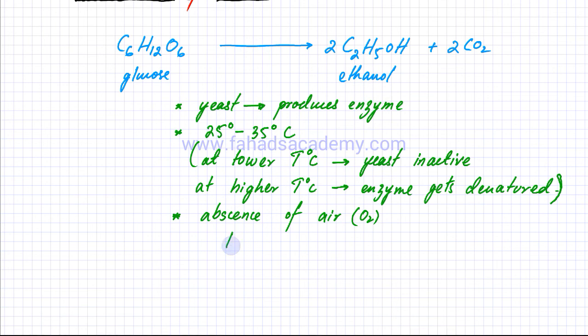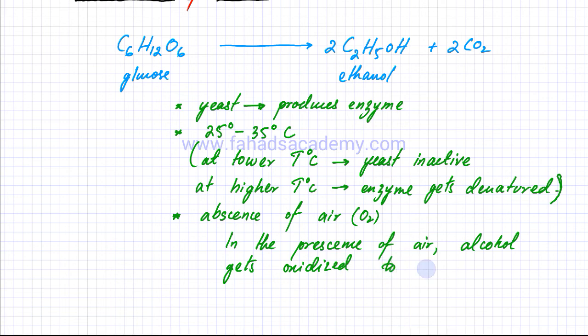So in the presence of air, the alcohol might get oxidized. As in the presence of air, the alcohol produced gets oxidized to a carboxylic acid. So we must avoid air as well. So whenever alcohol is produced, there shouldn't be any absence of air. The temperature used is around 25 to 35 degrees centigrade. And yeast is required, which produces an enzyme which facilitates the breakdown of glucose to ethanol.